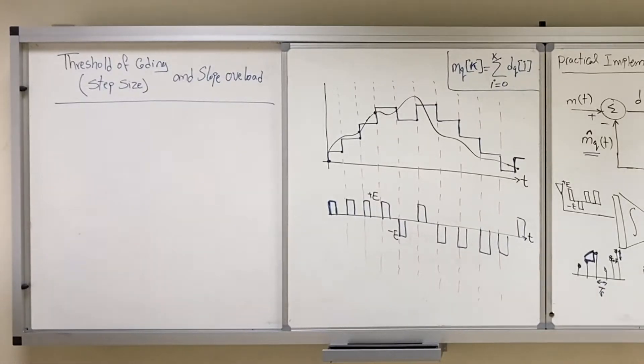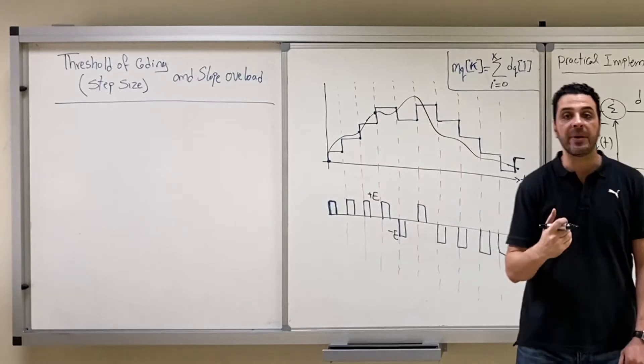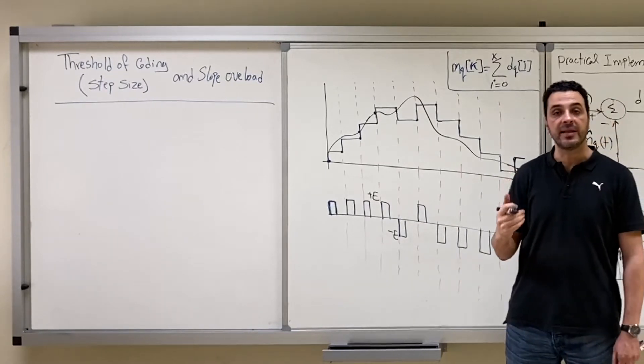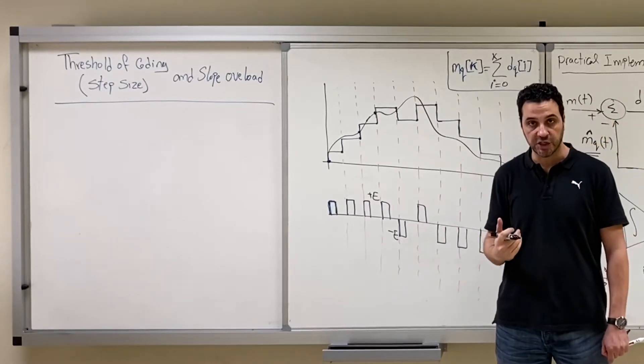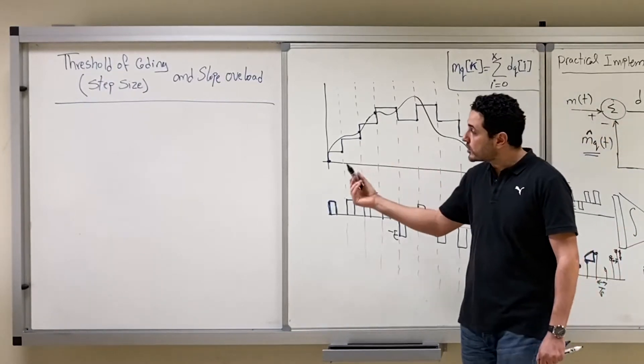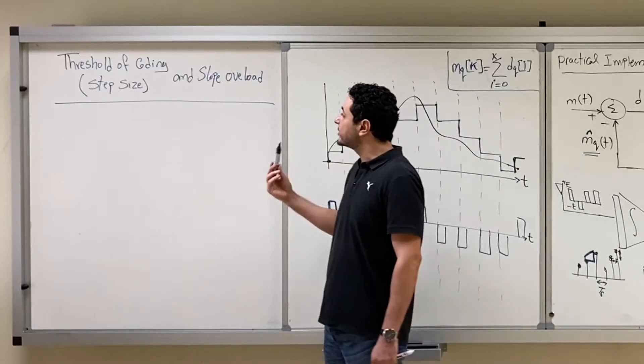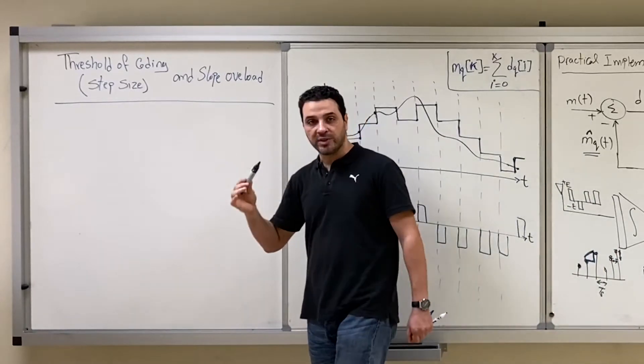In this video we are going to discuss some problems that happen when we implement delta modulation. The topic we are going to discuss is called threshold of coding and slope overload.